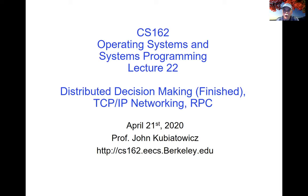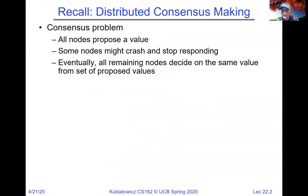Welcome back, everybody. We are going to pick up where we left off last time, talking about distributed decision-making. The consensus problem is one in which we have many nodes in the system. A node is a separate physical box that might be connected only via network. Some nodes can crash and stop responding, and eventually all nodes decide on the same value for a set of proposed values.